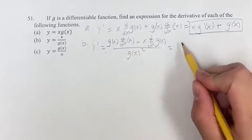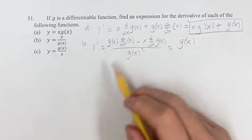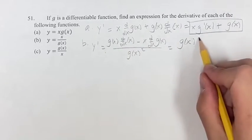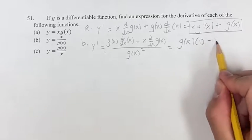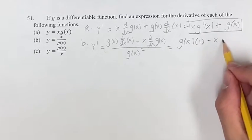And this is equal to g of x times the derivative of x, as we just found, as its coefficient, which is 1 minus x times the derivative of g of x.